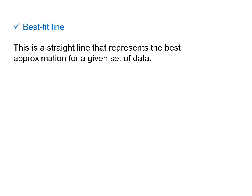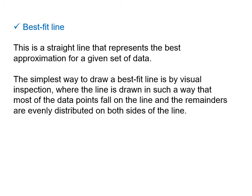Then, of course, we would have our best fit line. And this is simply a straight line that represents the best approximation for a given set of data. So your best fit line is the best approximation for your data points. It will show also the trend of your data points. The simplest way to draw a best fit line is by visual inspection where you would draw your line in such a way that most of the data points fall on the line and any remainders would be evenly distributed on both sides of the line.